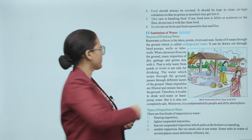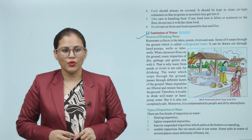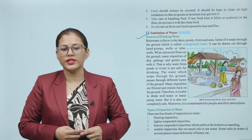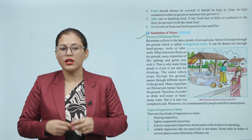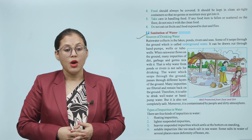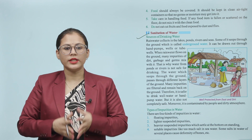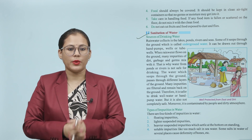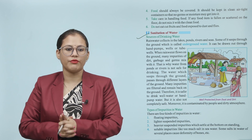Sanitation of water. Sources of drinking water: rain water collects in lakes, ponds, rivers and seas. Some of its water seeps through the ground, which is called underground water. It can be drawn out through hand pumps, wells or tube wells. When rain water flows on the ground, many impurities of dirt, garbage and germs mix with it. That is why water from ponds or rivers is not safe for drinking.